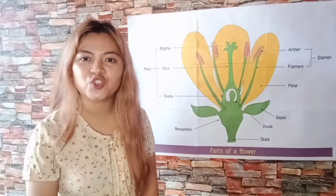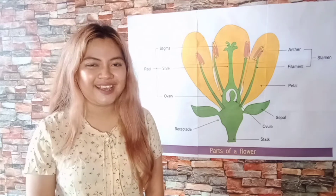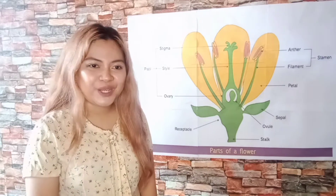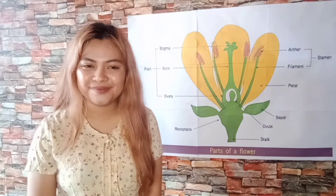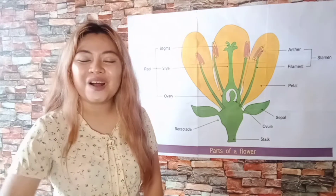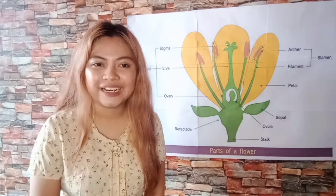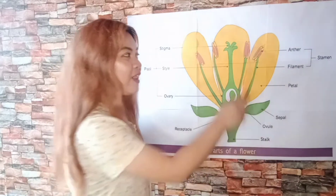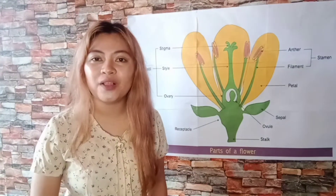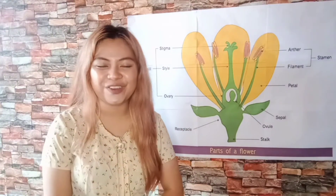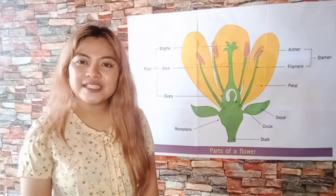The anther is a nub-like structure that produces pollen. Pollen is the male reproductive part of a flower. The pollen produced by the anther is called the male gametes.